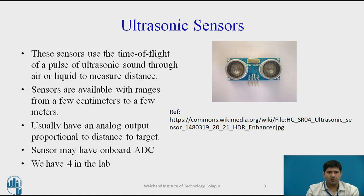They typically have an analog output proportional to the distance of the target. If they are digital, they have an onboard ADC which converts the analog signal into a digital signal. We have four of these particular sensors in the lab — these are Sharp sensors, quite good, and students have used them in the past for various projects and experiments.